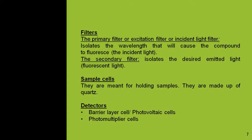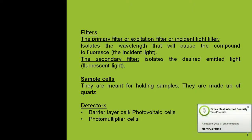As we have discussed, two filters are used: one is known as the primary filter and another is the secondary filter. The primary filter is also known as the excitation filter or incident light filter. This filter isolates the wavelength that will cause the compound to fluoresce, allowing the light of interest to be incident on the sample. The secondary filter isolates the desired emitted light, that is the fluorescent light.